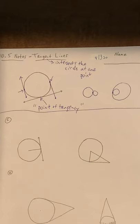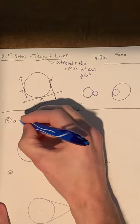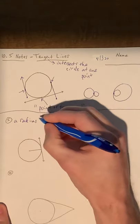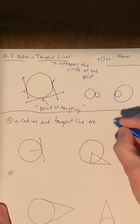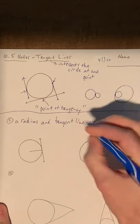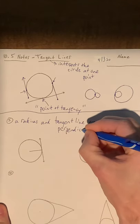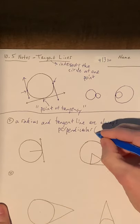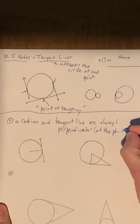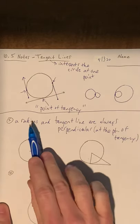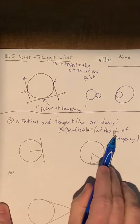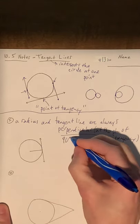All right, so first property that we're going to use and look at in this section. This is a very, very versatile and much used property. It says that a radius and tangent line are always perpendicular at the point of tangency. So whenever you have a radius, and wherever it touches the tangent line, at that point of tangency, it makes a 90 degree angle. They are perpendicular.